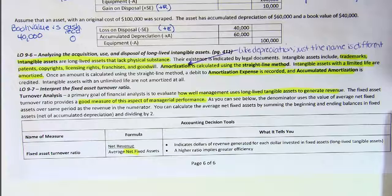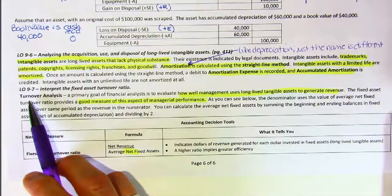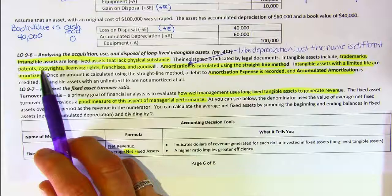For our last mini lecture on chapter 9, we're going to be covering learning outcomes 9-6 and 9-7, and both will receive light treatment. 9-6 is about intangible assets, and we spoke briefly about those at the beginning of this chapter in our first mini lecture.